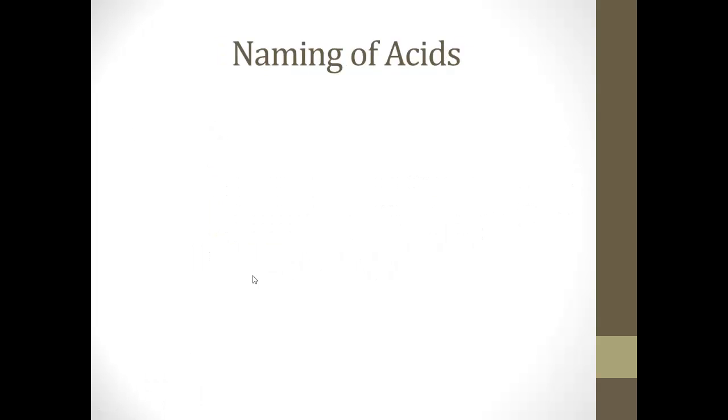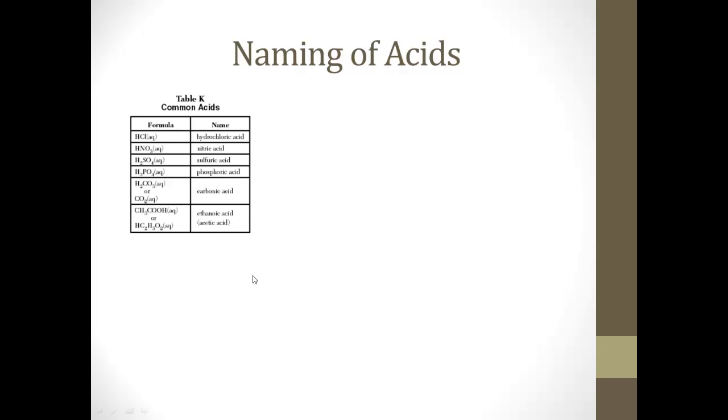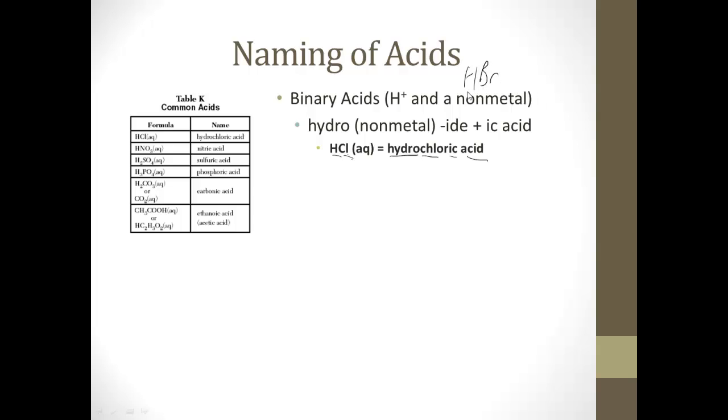Now we went over this when talking about naming different molecules. On your reference table you have some names of common acids. HCl is hydrochloric acid, HNO3 is nitric acid. The first kind is a binary acid, which is just an H plus and a non-metal. For that, we'll say hydro somethingic acid. So HCl, which is hydrogen and a non-metal, is hydrochloric acid. The chlor comes from chlorine. HBr would be hydrobromic acid.